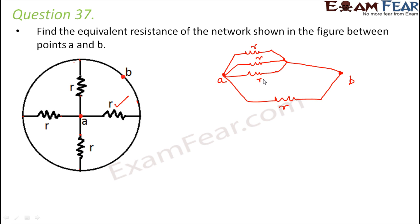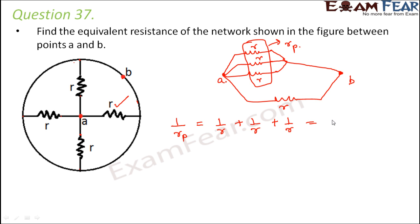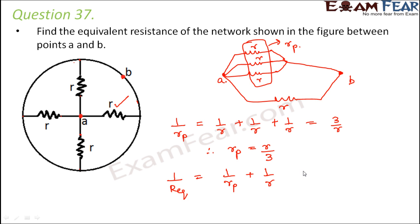Now you can tell which ones are in series and which are in parallel. All three resistors are in parallel. So 1/Rp = 1/R + 1/R + 1/R = 3/R, giving Rp = R/3. This R/3 is in parallel with R, so 1/R_equivalent = 1/Rp + 1/R = 3/R + 1/R = 4/R, therefore R_equivalent = R/4.